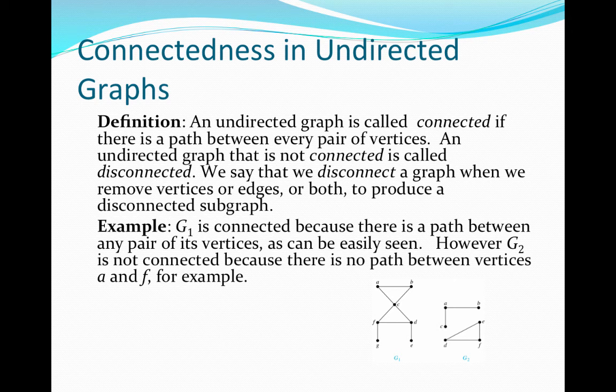Next, we consider the notion of connectedness in undirected graphs. We say that an undirected graph is connected if there is a path between any two vertices within that graph. If a graph is not connected, we say that it is disconnected. It's probably easiest to look at particular examples because almost right away we can understand or identify when a graph is connected versus not connected without really thinking too much about the actual definition.